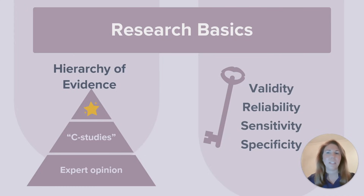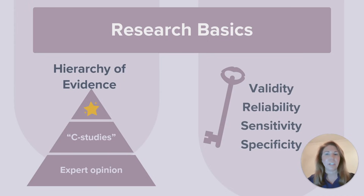The key takeaway is that you don't need to differentiate every middle-tier study type on your exam. Focus on recognizing what's top-tier, what's bottom-tier, and work your way from there. You'll also want to be comfortable with terms like validity, reliability, sensitivity, and specificity. For example, validity asks: did we measure what we meant to measure? While reliability asks: would we get the same result if we did it again? These might sound abstract now, but they actually show up in a lot of evidence-based practice questions.